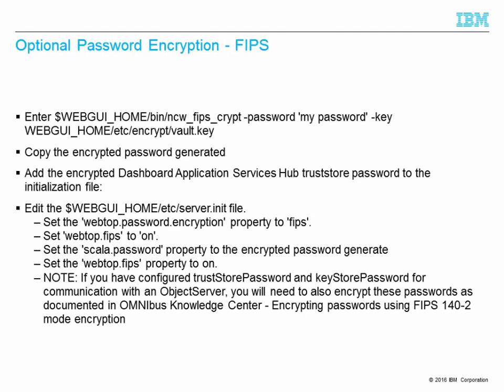For FIPS level password encryption, the configuration is very similar to AES. Run the NCW FIPS script tool which ships with WebGUI, put in your password and specify the location of the WebGUI vault, then take a copy of the encrypted password generated. Edit server.init and set scala.password to the encrypted version. In this case, set webtop.password.encryption to FIPS and webtop.FIPS to on. Again, if you have configured a trust store password or key store password, you also need to encrypt these with FIPS level encryption, as documented in the encrypting passwords using FIPS 140-2 mode encryption section in the Knowledge Centre.